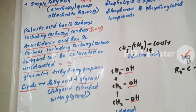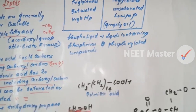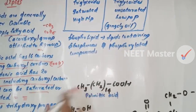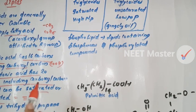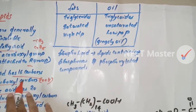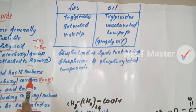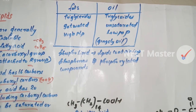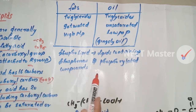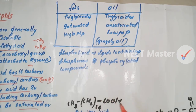We will learn about fats and oils. The similarity is that both contain fatty acid and triglycerol. Unsaturated fats have a high melting point — the amount of heat required to melt them means they remain solid at normal temperature. These are fats. Oils have a low melting point and remain liquid.